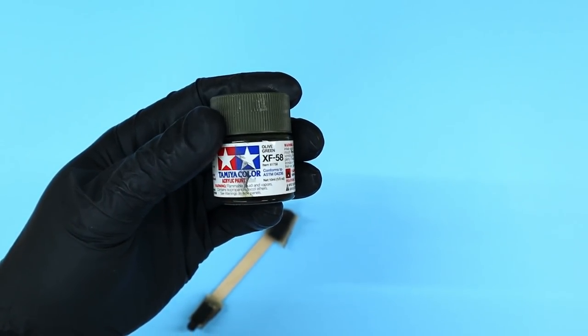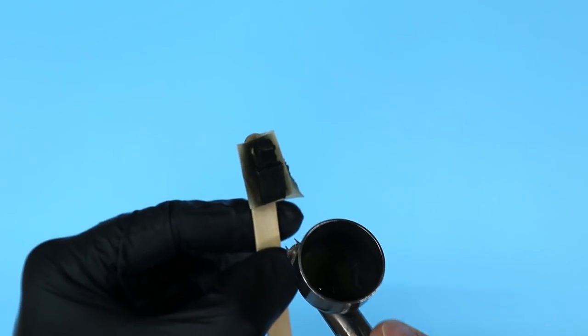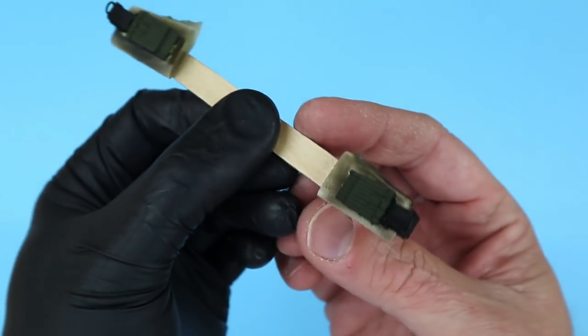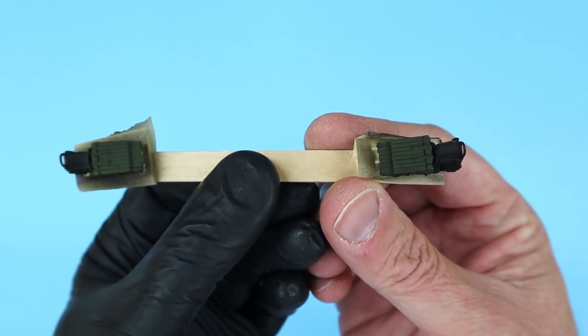For the ejection seat cushions, I first use Tamiya olive green to lay down a base color. I come back in with a little bit of Tamiya khaki and spray a light coat over the olive green.